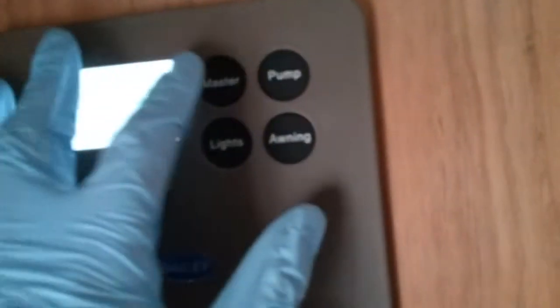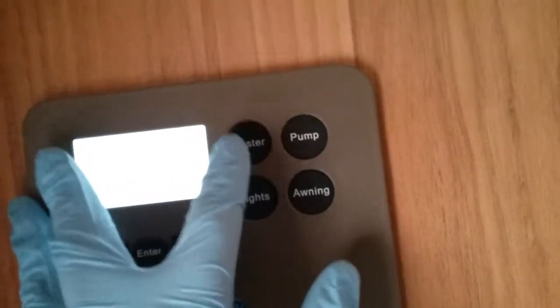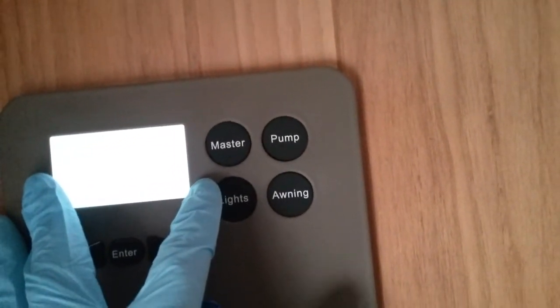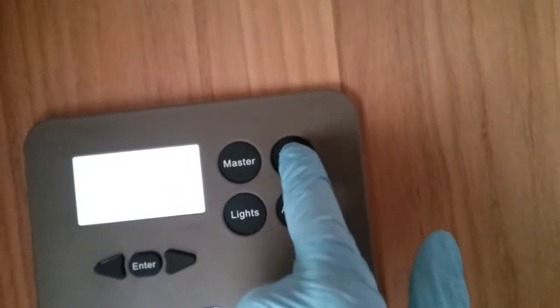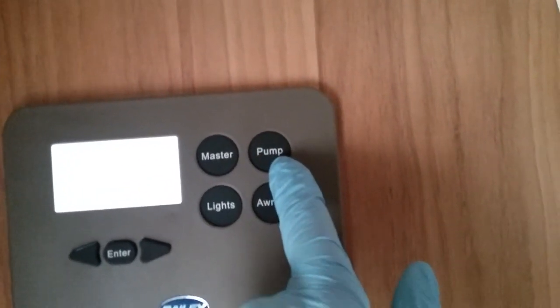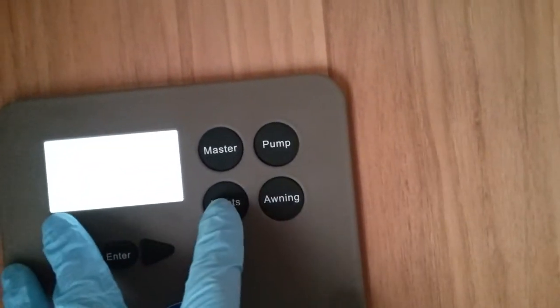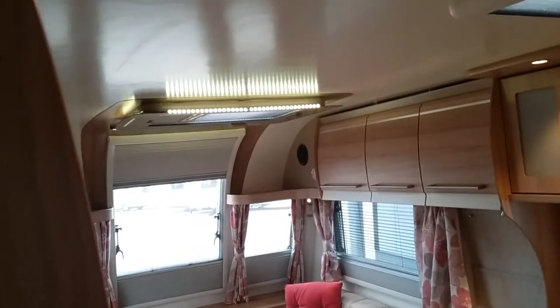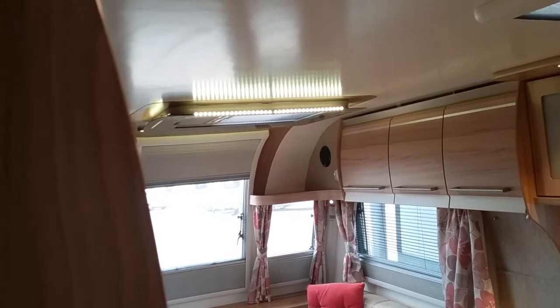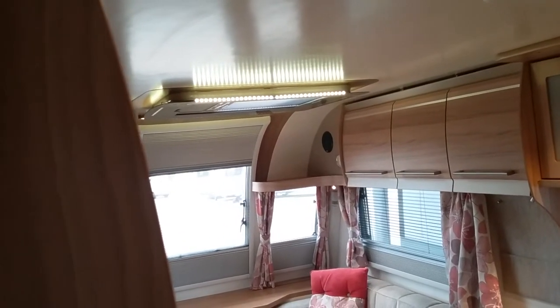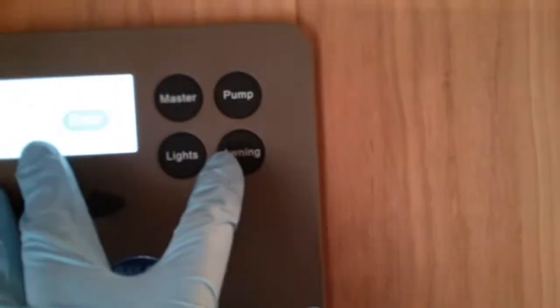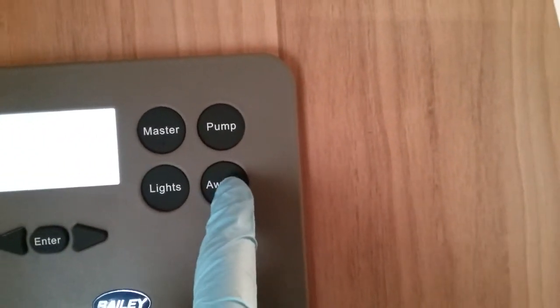If I firstly move to the main control panel, I can turn the 12 volt on just here. Beside that we then have water pump on and off. We need the water pump on so we can get water out the taps and fill the boiler if it's been drained down. Next we have the master switch for the lights. These can all be individually turned on and off on their own switches. And then lastly we have awning light on and off.